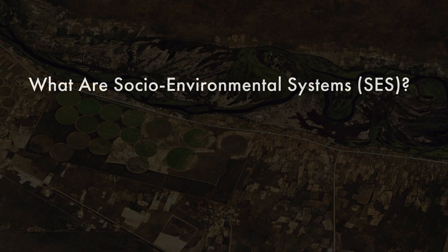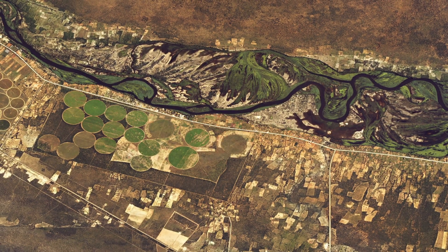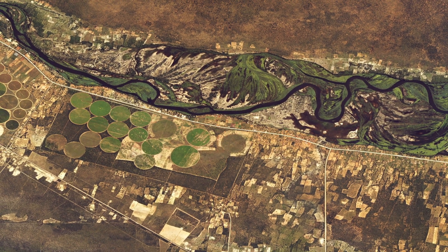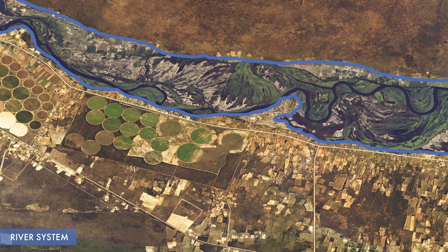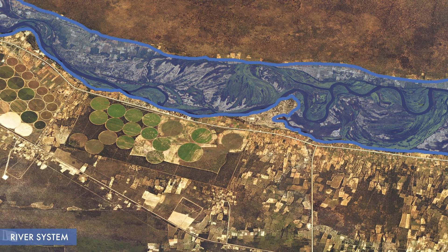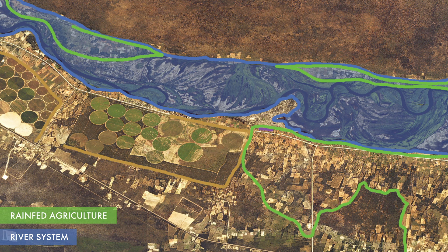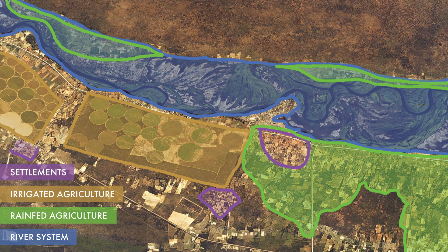Let's take a moment to define a socio-environmental system. This is one of my favorite satellite images because there are multiple social and environmental systems intertwined within our view. The river system, seen here outlined in blue, includes the hydrologic system interacting with floodplain ecosystems to support water-dependent flora and fauna. These environmental systems are dependent on river flows, which are shaped by weather, climate, and fluvial processes. The social systems, seen here outlined in green, orange, and purple, include both rain-fed and irrigated agriculture and small settlements.